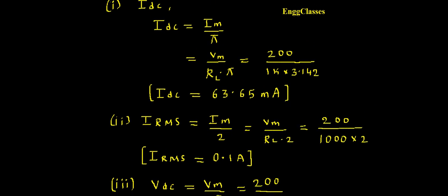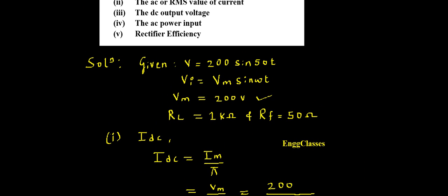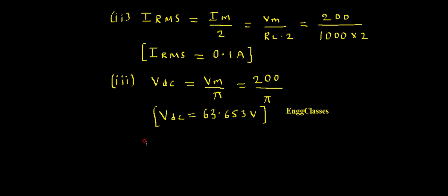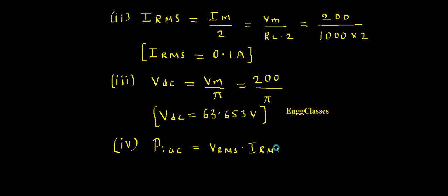The fourth parameter is the AC input power PI_AC. The formula for power is P = V × I, and since we are finding AC input power it must use RMS values: PI_AC = VRMS × IRMS. We already have IRMS = 0.1 A, so we need to find VRMS.